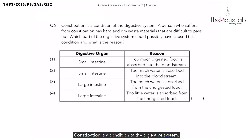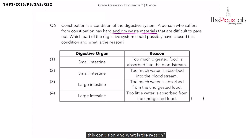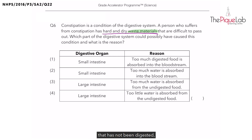Constipation is a condition of the digestive system. A person who suffers from constipation has hard and dry waste materials that are difficult to pass out. Which part of the digestive system could possibly have caused this condition, and what is the reason? When we talk about waste materials, we are actually referring to the food that has not been digested, which is called the undigested food.